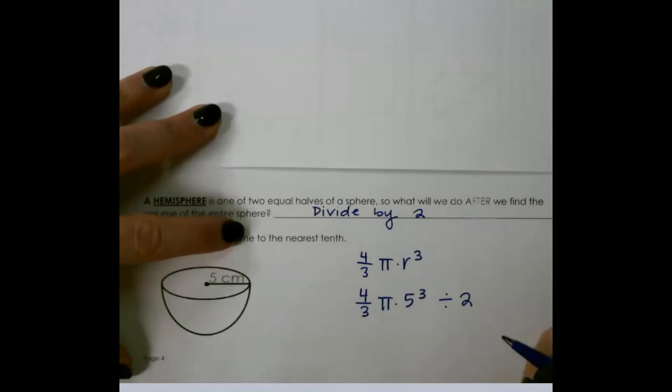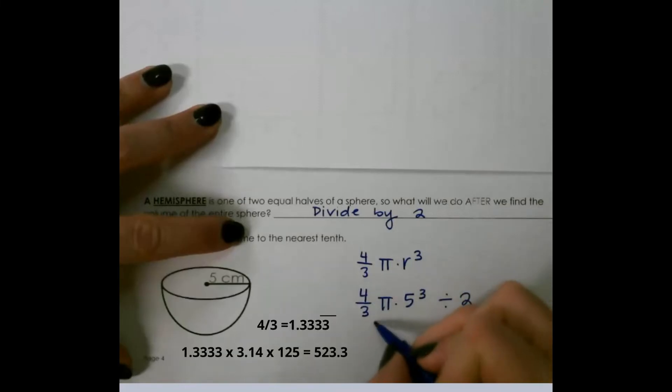So let's plug that in. So the volume of our sphere would be 523.33, and then when we divide that by two, we would get 261.67 centimeters cubed for the hemisphere.